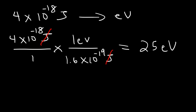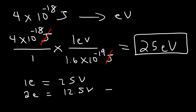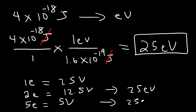This result means that 1 electron moving through 25 volts would have that energy. If there were 2 electrons, each would have 12.5 volts, giving a total of 25 electron volts. With 5 electrons, each would have 5 volts for a total energy of 25 electron volts. So the number of electrons times the voltage on each gives the energy in electron volts.